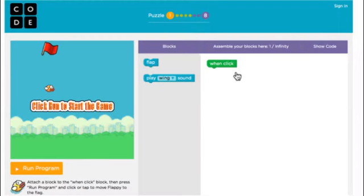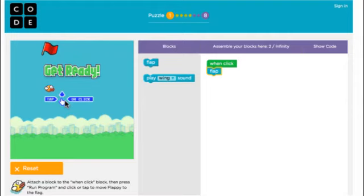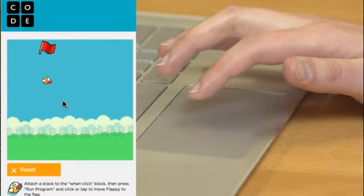If you take a look at the workspace, there are some green blocks that are filled in for you. These are event handlers. If you want the bird to flap when you click the mouse, you can do that by attaching the flap block to the appropriate event handler. And now in your game, whenever you click the mouse, the bird will flap.